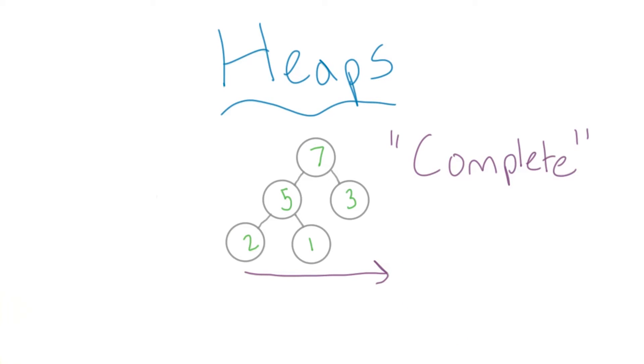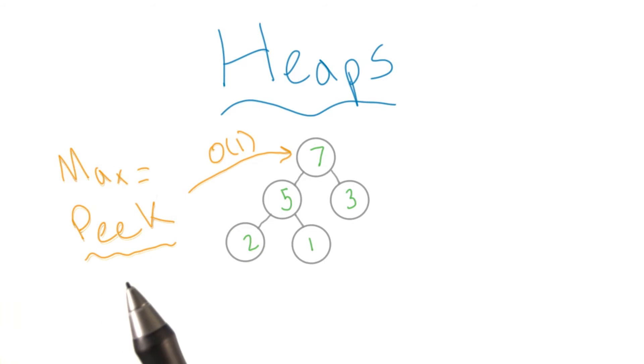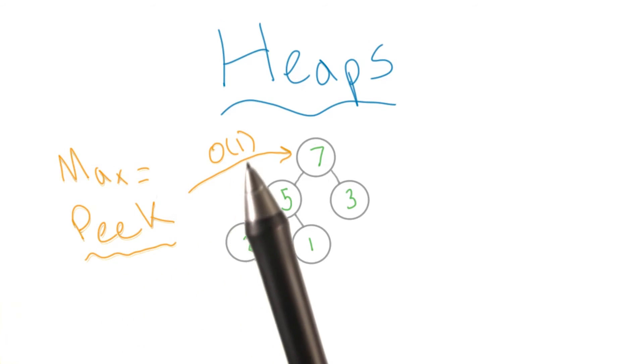In this heap, a function that gets the maximum value, also called peak, happens in constant time.